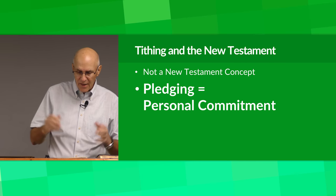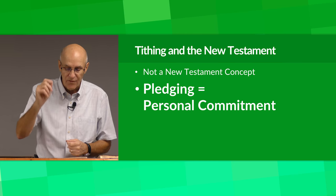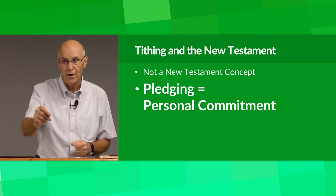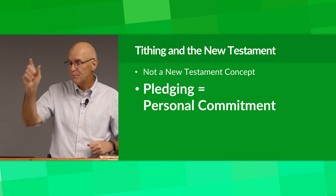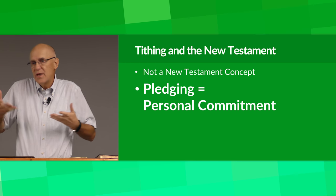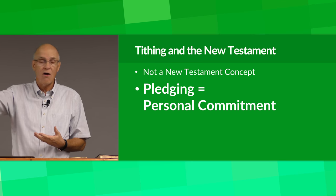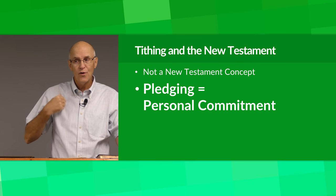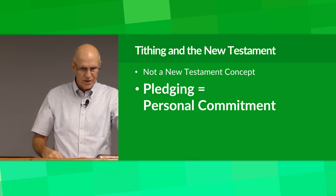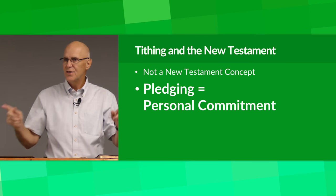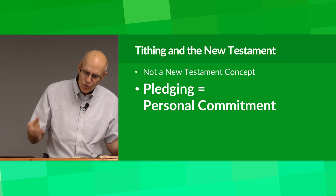Tithing is not pledging. Tithing is a requirement that each person must give a certain amount to the Lord — that's the big difference. In pledging, you decide what you're going to give based on your income and circumstances. In tithing, you don't get to decide; the church decides and tells you that you're going to give ten percent. Freedom is the difference.